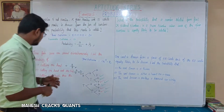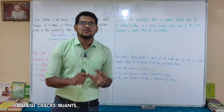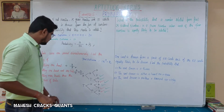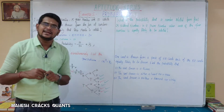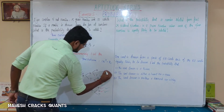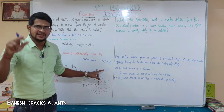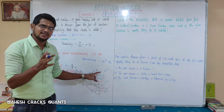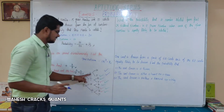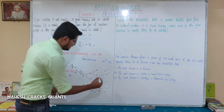Third question: getting more heads than tails. We need outcomes where the number of heads exceeds tails. HHH has 3 heads, 0 tails — qualifies. HHT has 2 heads, 1 tail — qualifies. HTH has 2 heads, 1 tail — qualifies. THH has 2 heads, 1 tail — qualifies. That gives 4 favorable outcomes.